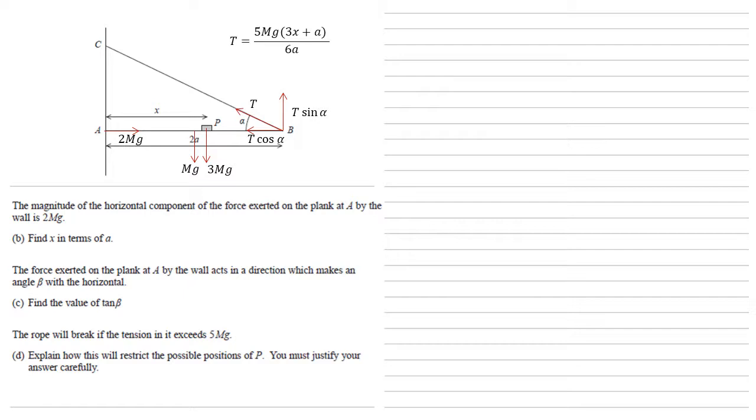We're now told that the force exerted on the plank at A by the wall acts in a direction which makes an angle beta with the horizontal, and we want to find the value of tan beta. So we've got the horizontal component of this, the 2Mg, so there'll also be a vertical component, let's call it F, which we're then going to use to find the resultant force with the angle of beta.